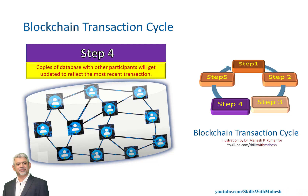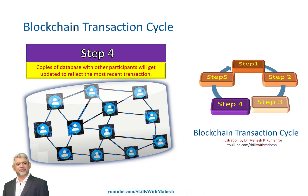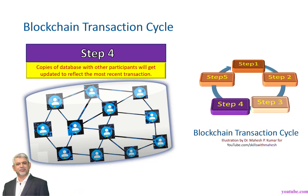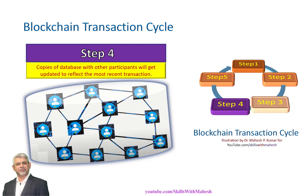Step 4 of the blockchain transaction cycle: transactions and data are recorded simultaneously in the database of all the participants. As I always say, blockchain is basically a networked distributed database. Copies of the database with other participants will get updated to reflect the most recent transaction. Since blockchain is a distributed system, participants need to follow protocols to connect, communicate, and transact with each other, and ensure transactions and data are recorded simultaneously in the databases of all participants.